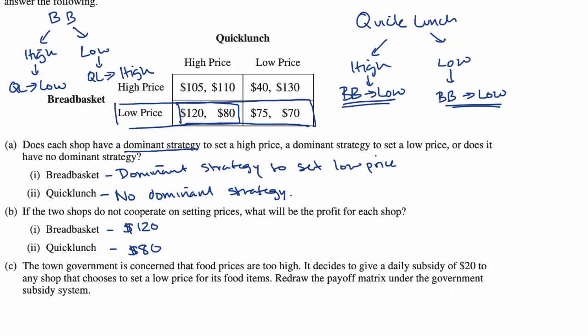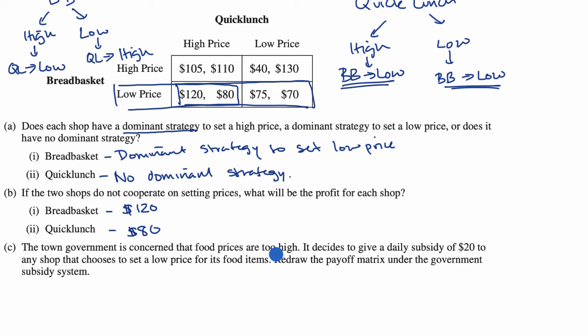The town government is concerned that food prices are too high. It decides to give a daily subsidy of $20 to any shop that chooses to set a low price for its food items. We need to redraw the payoff matrix under this government subsidy system.